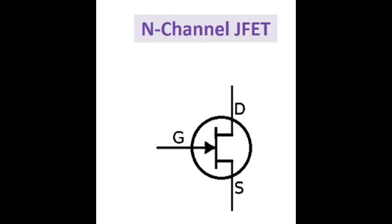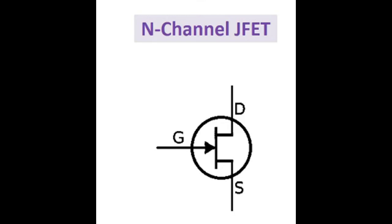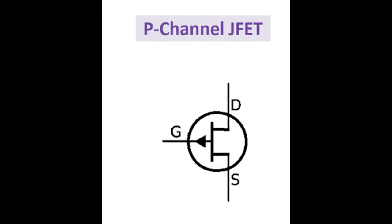In the symbol, if the direction of the arrow on the gate pin shows inside, it is N channel and if it shows outside, it is P channel.